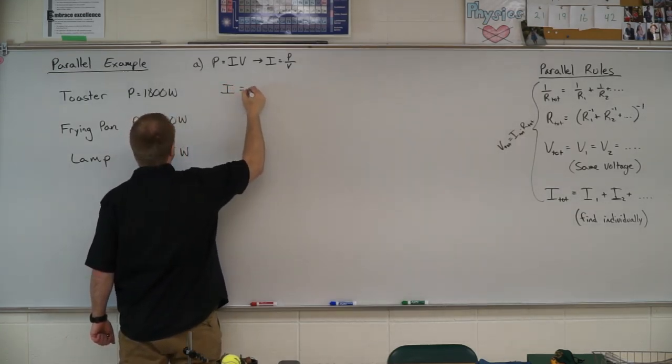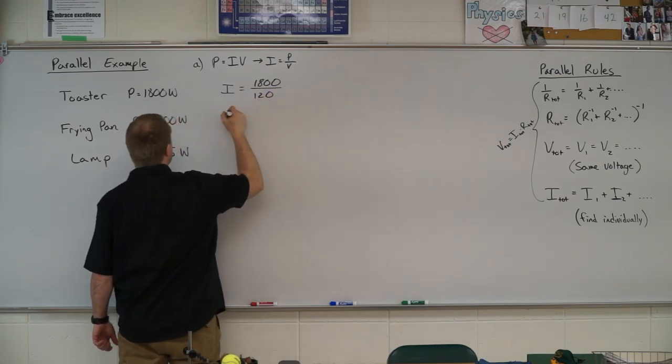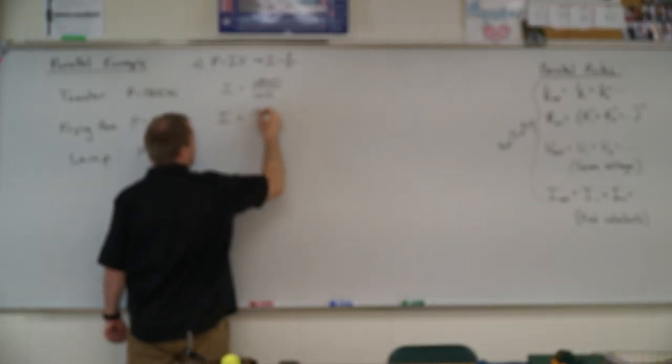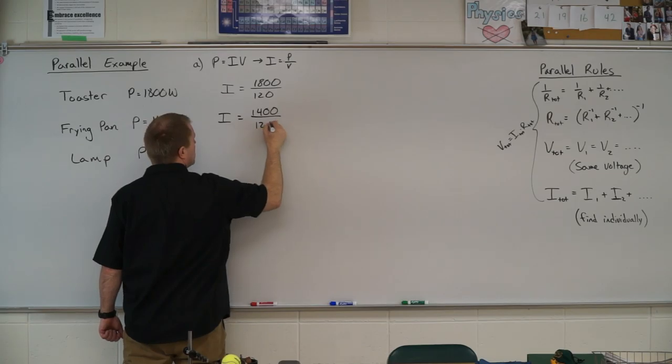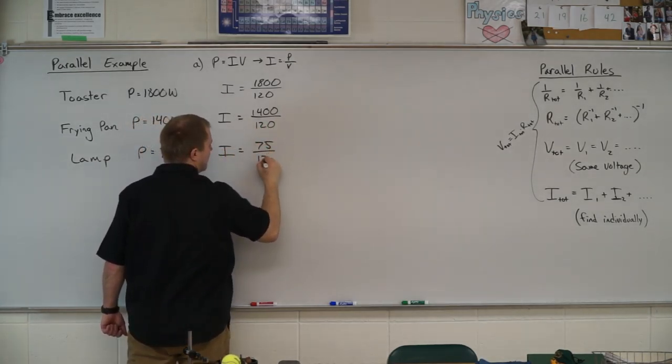The current for my toaster is going to be 1800 divided by 120. The current for my frying pan is 1400 divided by 120. And the current for my lamp is 75 divided by 120.